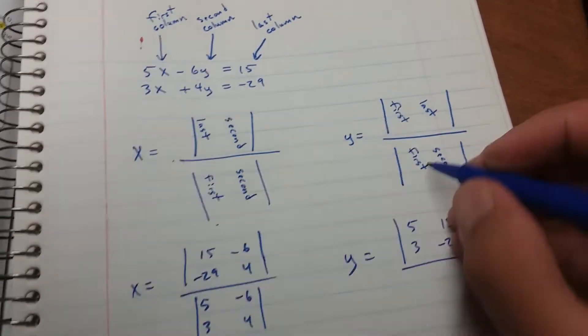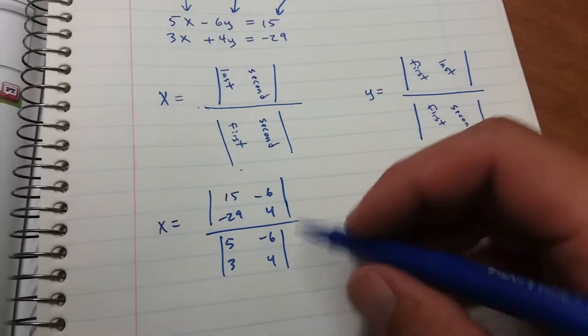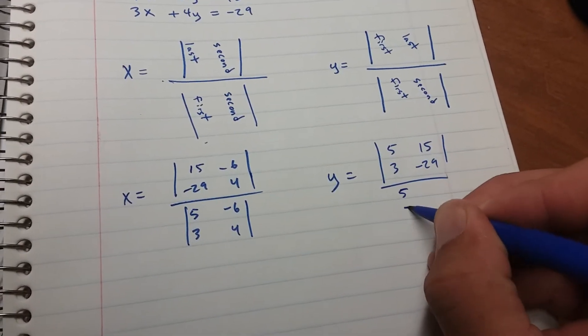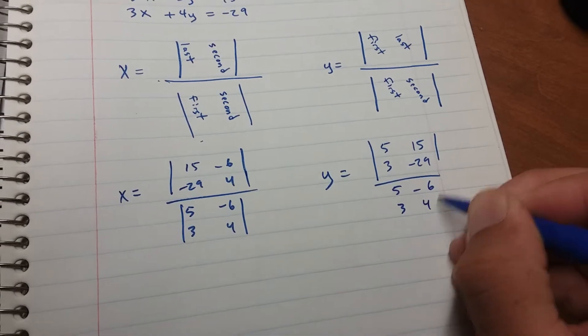And then notice that in the denominator you have the same determinant. 5, 3, negative 6, 4.